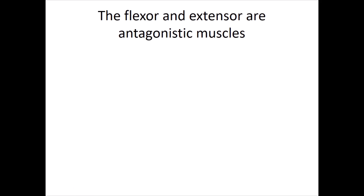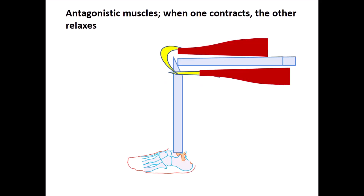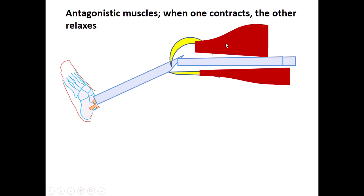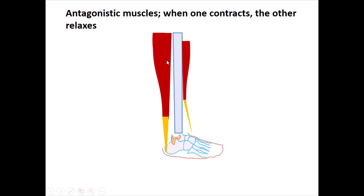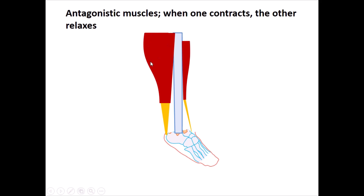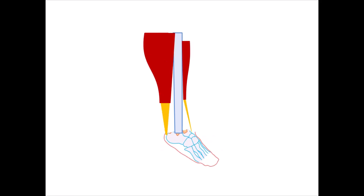The flexor and extensor muscles qualify as antagonistic muscles: they have opposite functions, and when one is active or contracts, the other is relatively inactive or relaxed. In the leg, the extensor is the quadriceps and the flexor is the hamstring. When we extend, the extensor is contracted and the flexor is relaxed; when we flex, the opposite. For the foot, the extensor is the triceps sura and the flexor is the tibialis anterior. When we extend, the triceps sura is contracted and the tibialis anterior is relaxed; when we flex, the tibialis anterior contracts and the triceps sura is relaxed.